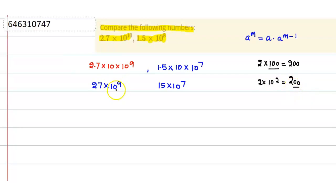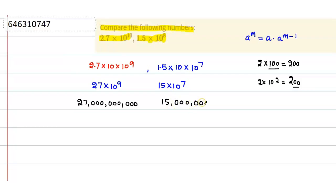Similarly here, this is 10 to the power 9, so the number of zeros we have is 9. That means 27 followed by 9 zeros. And again, we have 7 zeros here for 1.5 into 10 to the power 7, giving 15 followed by 7 zeros. As you can see, the maximum number of zeros these numbers have — 27 has 9 zeros and this has only 7 zeros.